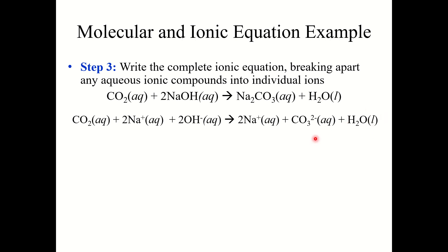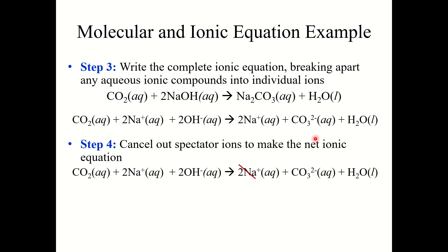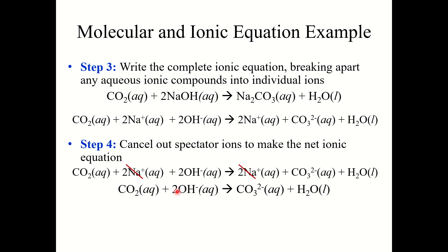Now look for spectator ions. The only spectator ion is Na+, which is the same on both sides. Removing it gives the net ionic equation: CO2 + 2OH− → CO3²− + H2O. To recap: the balanced molecular equation, the complete ionic equation, and the net ionic equation have now all been written for this reaction.